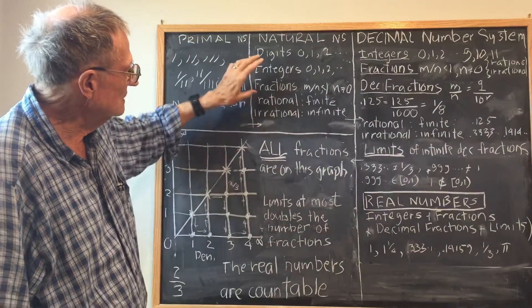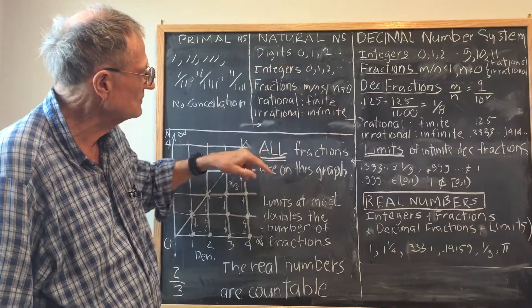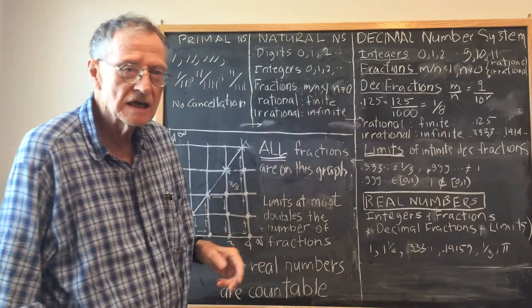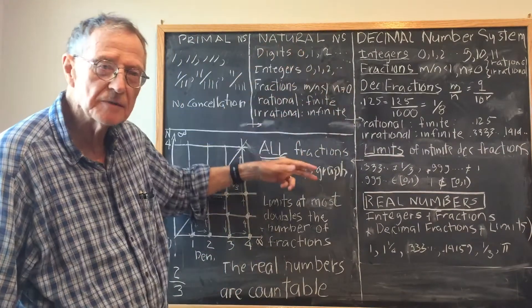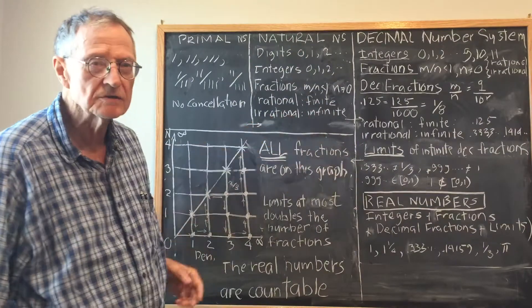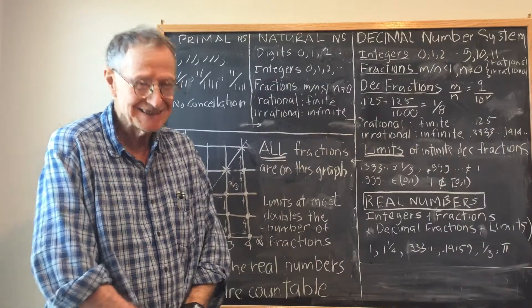In this system we have fractions m over n less than 1, where m and n are integers, n unequal to 0, and they divide into rational, where the numerator and denominator are finite, and the irrational, where the numerator and or the denominator are infinite.